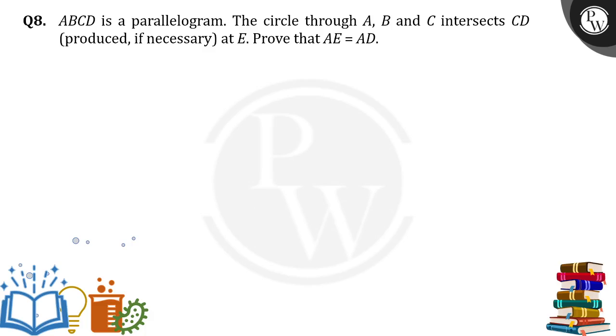Hello everyone, ABCD is a parallelogram. The circle through A, B and C intersects CD at E. Prove that AE equals AD. So how can we do that? Let us have a look.